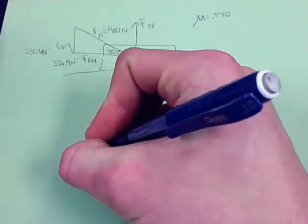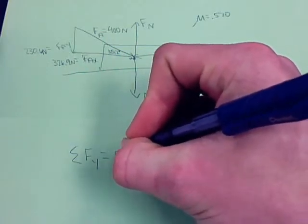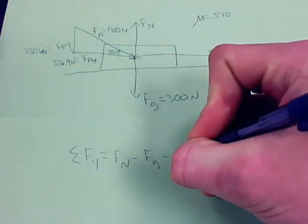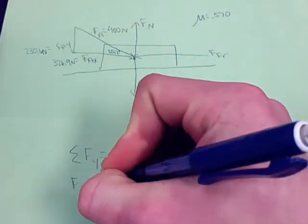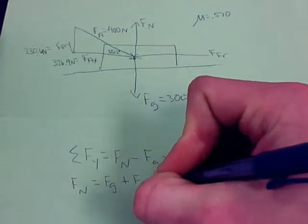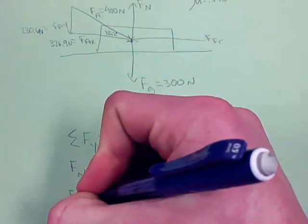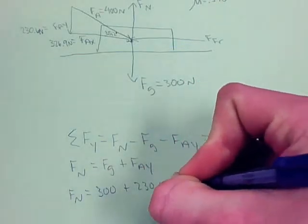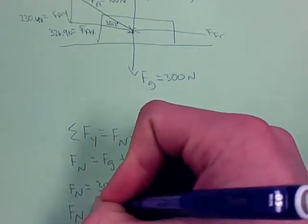So now we're going to do our sum of forces in the y direction equation in letters, which is sum of Fy equals Fn minus Fg minus Fay equals zero. Now you're going to rearrange this equation so that you're finding out what Fn equals, which is Fg plus Fay. Then you plug in your numbers, so you're going to have Fn equals 300 plus 230.6. And once you do that, your answer is going to come out to be 530.6 newtons.